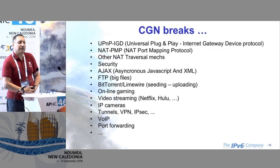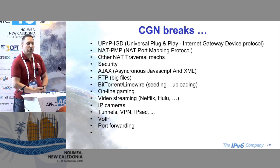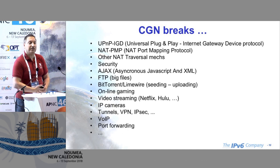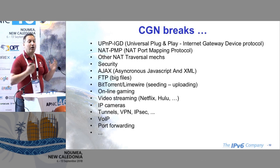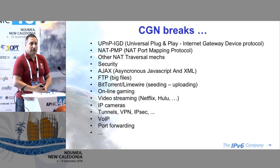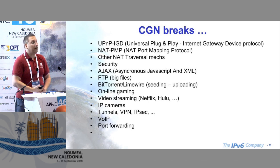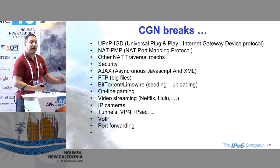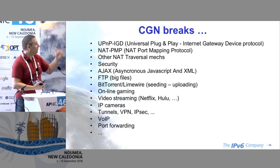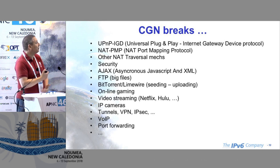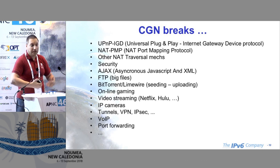Many things get broken with carrier-grade NAT. Most problems have solutions, but that means deploying ALGs — application layer gateways. If you have a carrier-grade NAT costing $200,000, you need at least two for high availability. And if you set up ALGs, instead of supporting 100,000 users, maybe you can only support half. So solving the problems that carrier-grade NAT creates means buying more boxes, making your network more and more expensive.